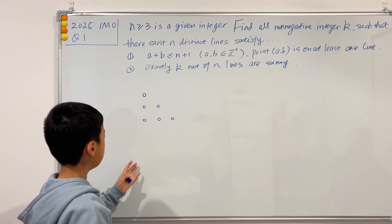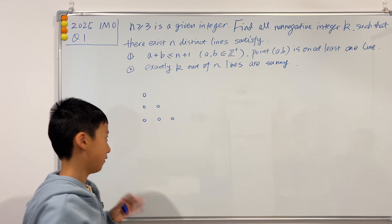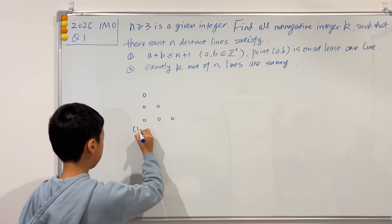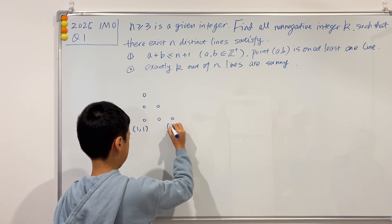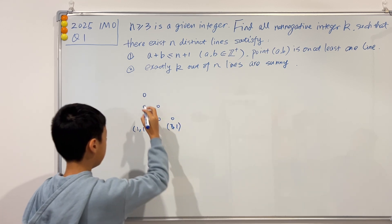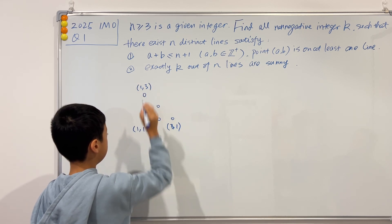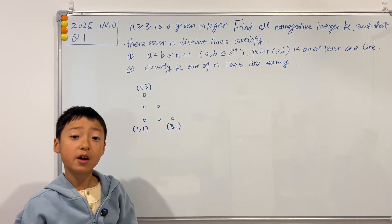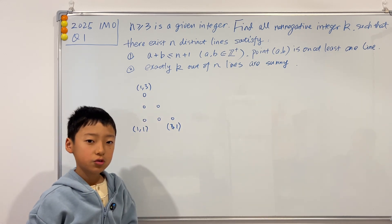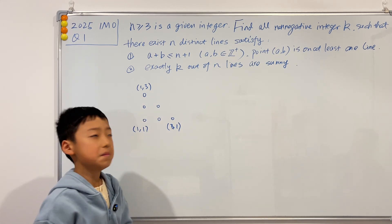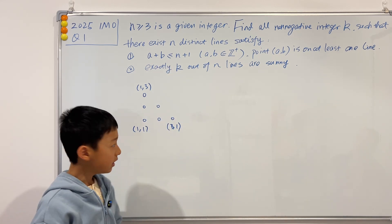I'm just going to tell you the coordinates of these dots so you don't get confused. This dot is (1,1), this dot is (3,1), and this dot is (1,3). You can verify this on your own — if you check all of these dots in the middle, you see that all of them satisfy a plus b less than or equal to 4.